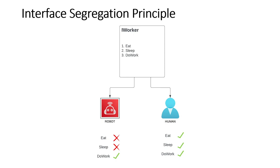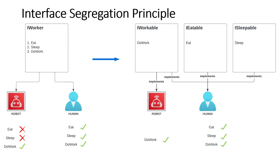The Interface Segregation Principle solves this by splitting the original IWorker interface into three: IWorkable, IEatable, and ISleepable, where each interface only implements one method — do work, eat, and sleep respectively. The robot class only implements IWorkable, while the human class implements IWorkable, IEatable, and ISleepable. Note that this example is simplified; in general you want to meaningfully group closely related functionalities into one interface rather than having single-method interfaces.